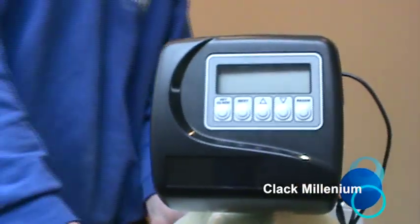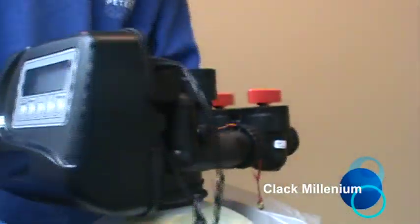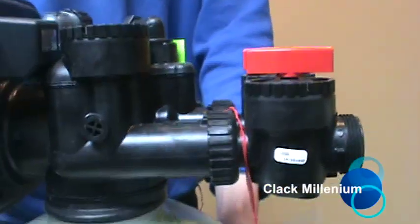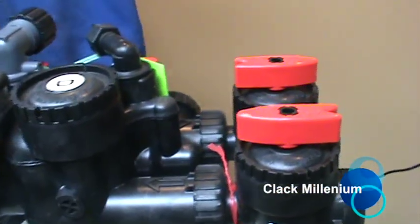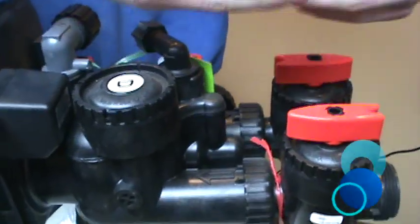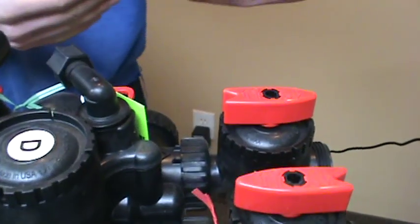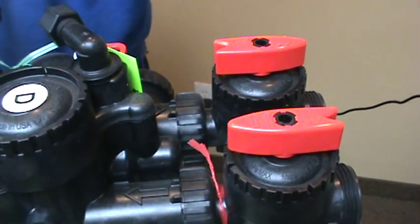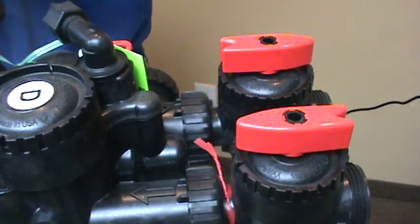Next here we've got a Clack softener and they're going to use a plastic tube valve bypass here. And so right now if you come down in your basement you've got one of these, the levers are going to be pointing in line with the plumbing and that means the water is going into the softener, it's going out, everything's working.